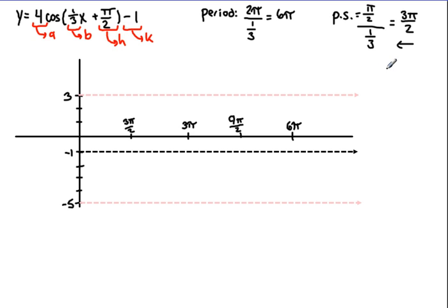So once we have all this information down, we can actually start and go ahead and sketch our graph. What we should do first is just get a sketch of our graph without the phase shift, and then we'll just move everything over to the left, 3 pi over 2 units.